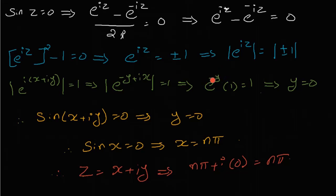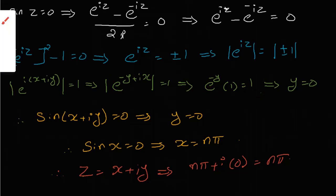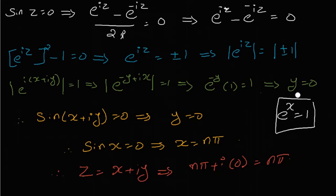So the modulus value of e^(iz) includes the factor e^(−y). Since modulus equals 1, and e^(−y) is always positive, we need e^(−y) equal to 1. So minus y equals 0, that is y equals zero.